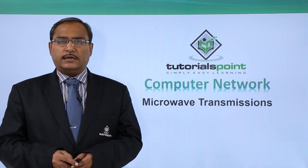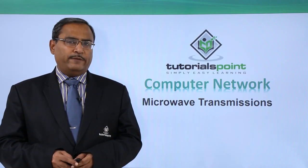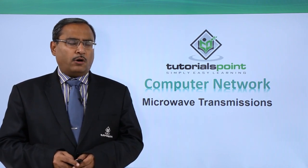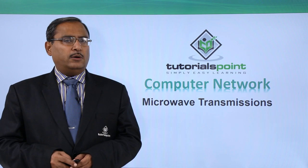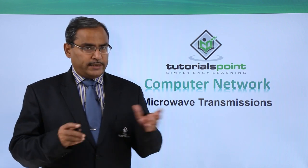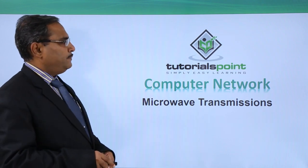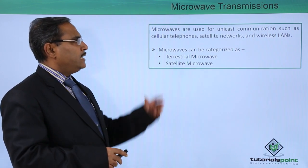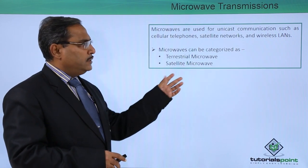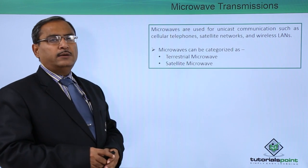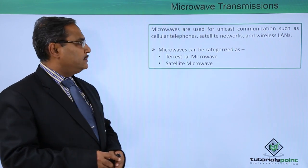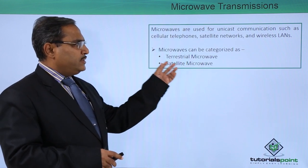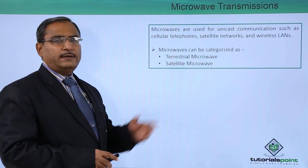In this video we are going to discuss microwave transmissions. Microwave transmissions are mainly used for unicast oriented communications. Microwaves are used for unicast communications such as cellular telephones, satellite networks, and wireless LANs. Microwaves can be categorized as terrestrial microwave and satellite microwave.